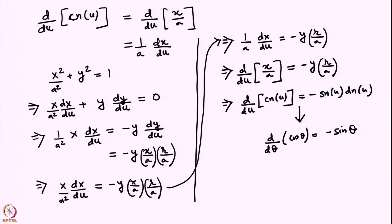You can see immediately that in the limit of k going to 0, d/du of CN(u) goes to d/dθ of cos θ: DN goes to 1, SN(u) goes to sin θ, and the minus sign remains intact. So this is again a generalization of something we already know for circular functions.